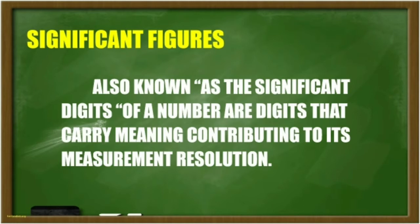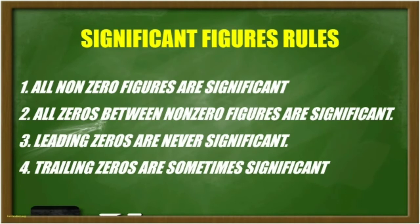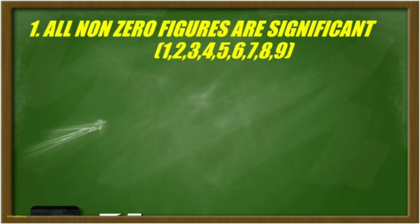The 4 rules in identifying significant figures are: 1. All non-zero figures are significant. 2. All zeros between non-zeros are significant. 3. Leading zeros are never significant. And 4. Trailing zeros are sometimes significant.